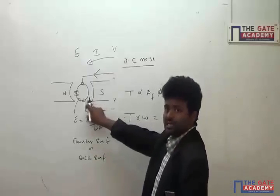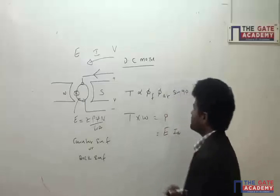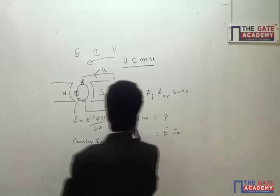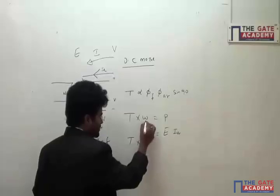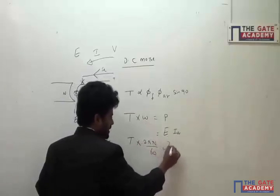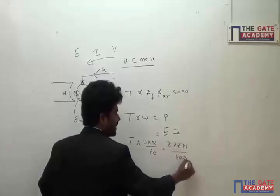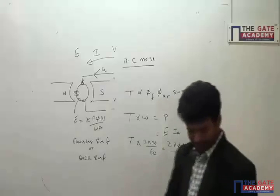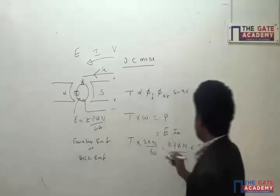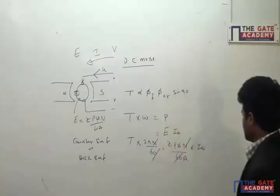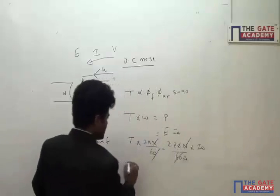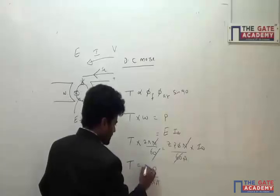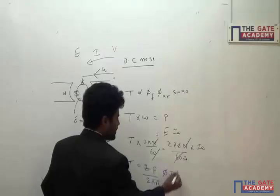The power on the armature rotor is E times IA, where IA is the armature current. Using torque times omega equals E times IA, and substituting omega = 2πN/60 and E = ZPφN/(60A), the N terms cancel out. From this we can derive the torque equation.